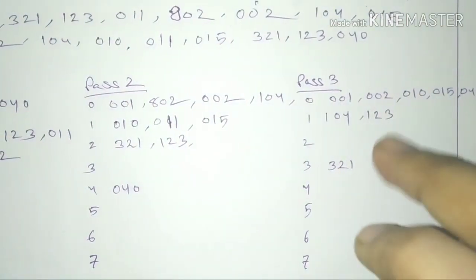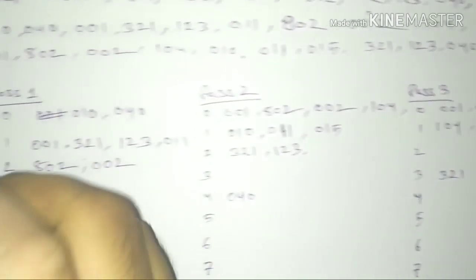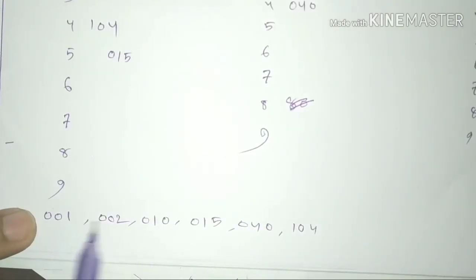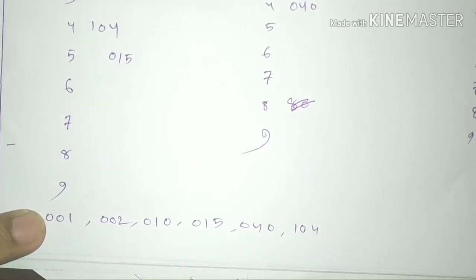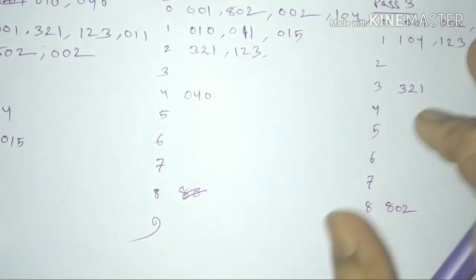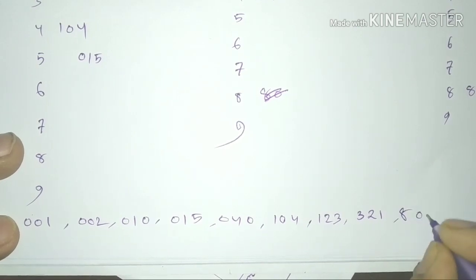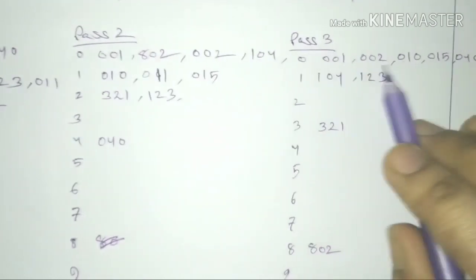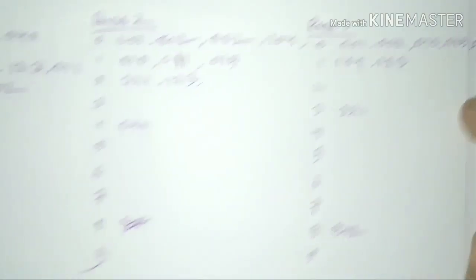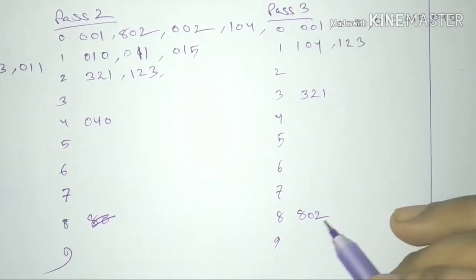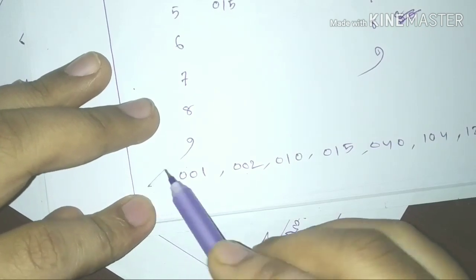So, when we have 3 digits and 3 passes, we can write the final sorted output. We can see the sorted sequence: 001, 002, 100, 802. So the values 1, 2, 3 and 3, 2, 1 and 8, 0, 2 are now sorted. We have successfully completed the Radix Sort.